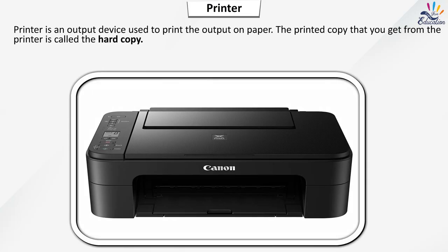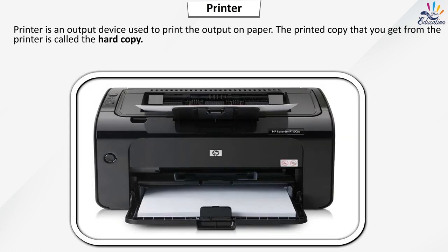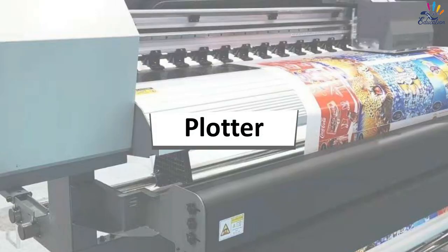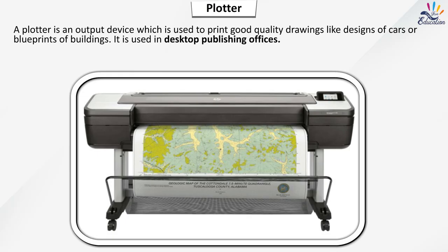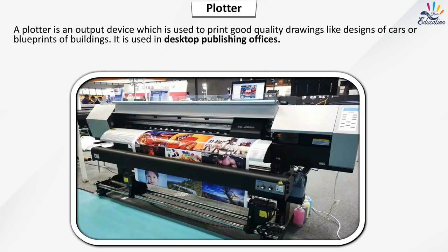Printer is an output device used to print the output on paper. The printed copy that you get from the printer is called the hard copy. A plotter is an output device which is used to print good quality drawings like designs of cars or blueprints of buildings. It is used in desktop publishing offices.